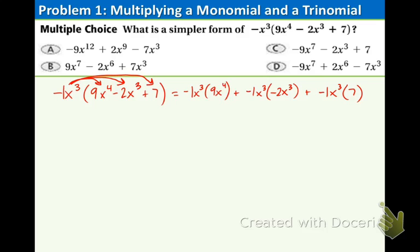Once you get used to these you can skip that step, but right now I don't want you to. Let's look at the coefficients: negative 1 times 9 is negative 9, and now we add the exponents because they are the same base — so we have 3 plus 4. Next, negative 1 times negative 2 is positive 2, and then x to the 3 plus 3. And lastly, negative 1 times positive 7 is negative 7, and x to the 3rd is the only variable there.